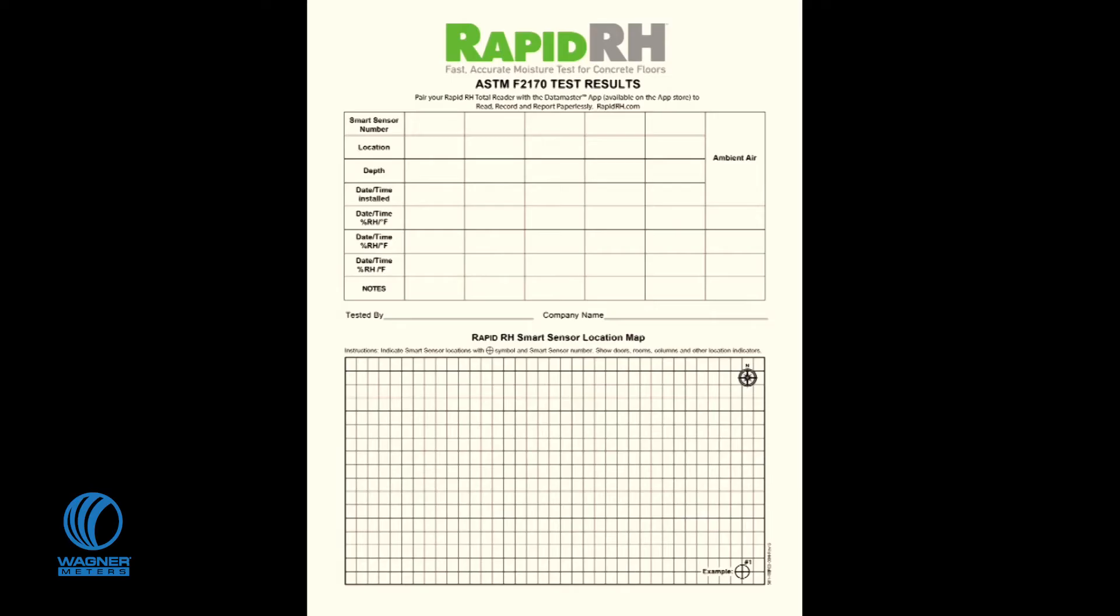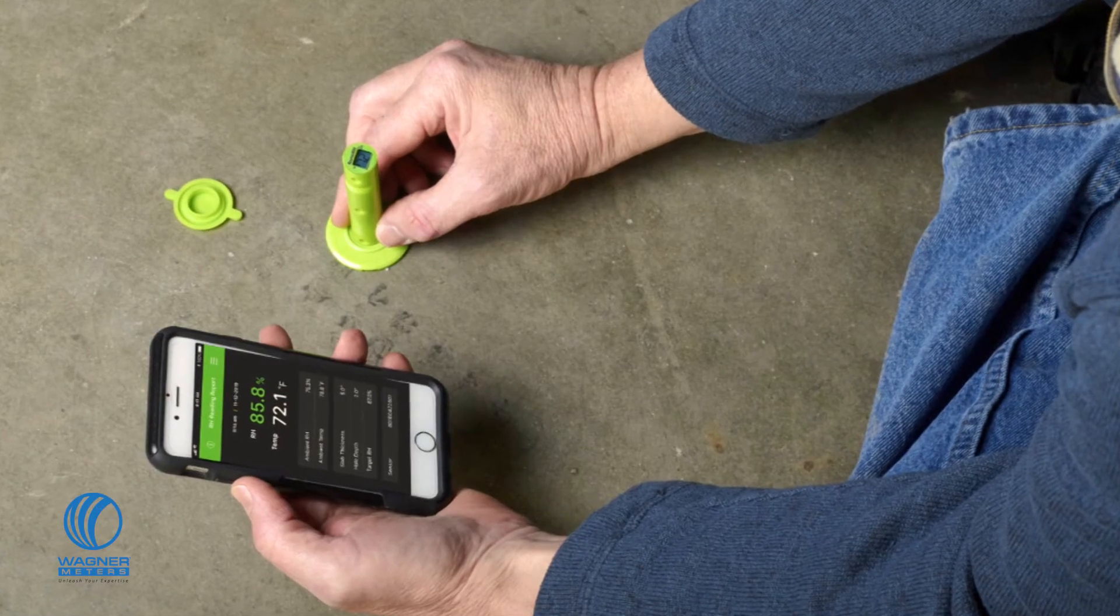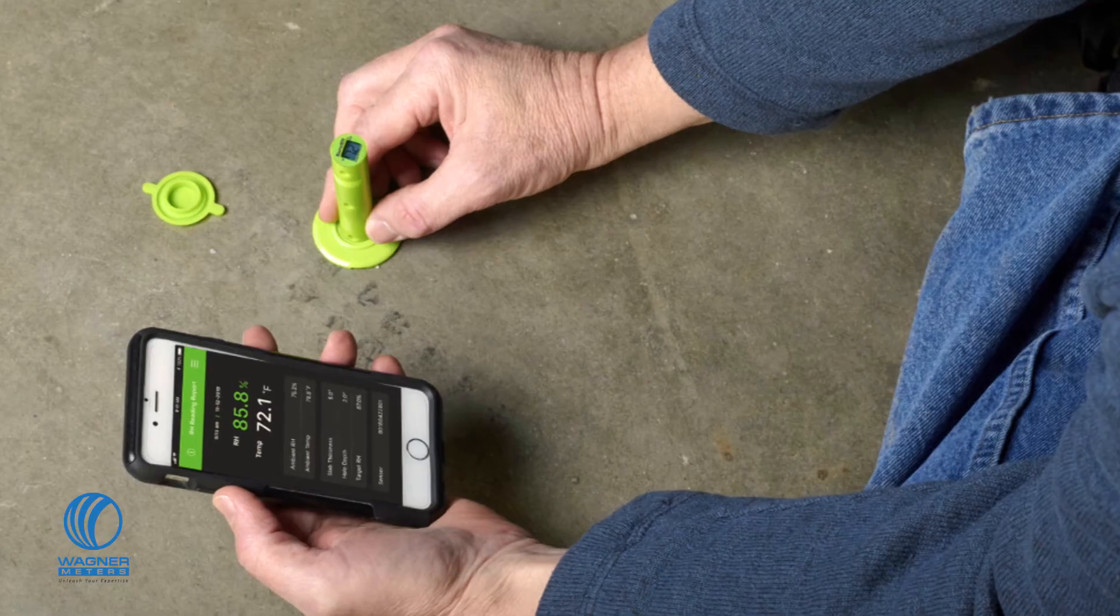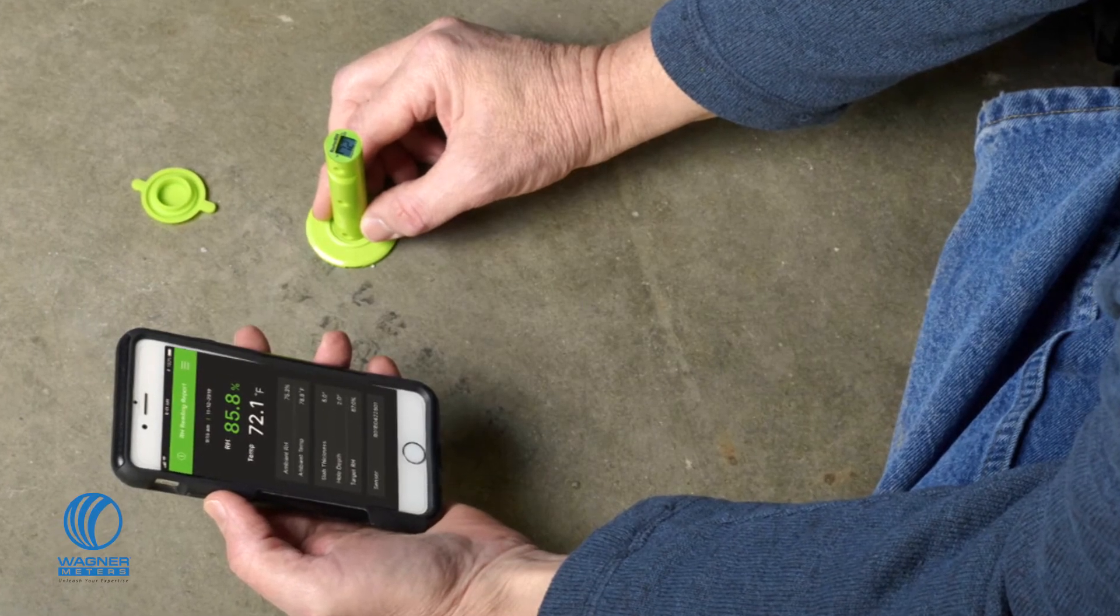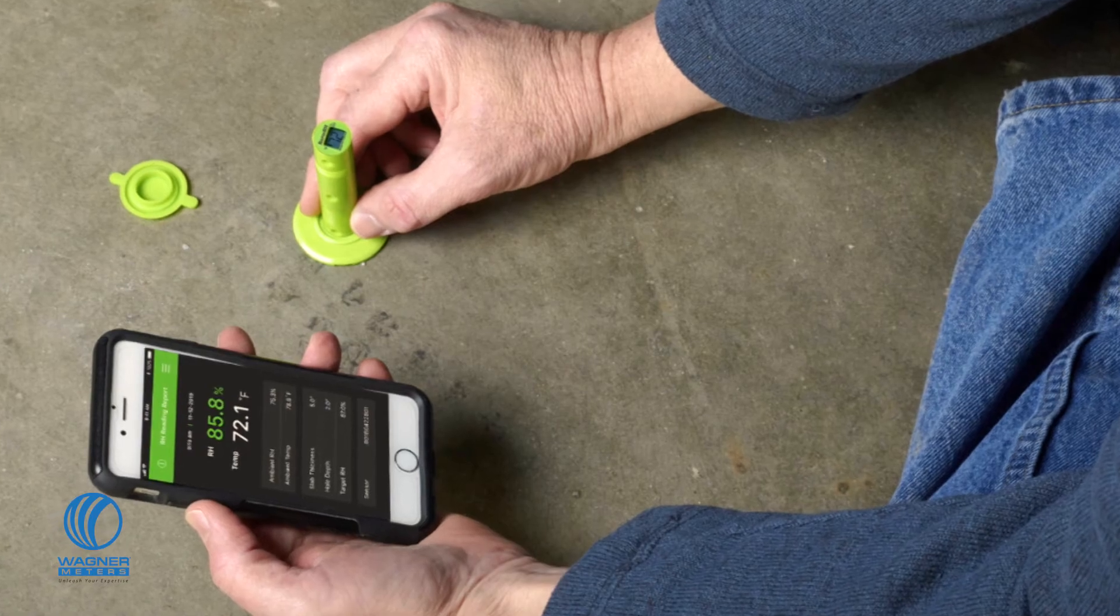Record the readings on the plotting chart that is included with each package of L6 smart sensors. As an alternative, you may also use the total reader to send your sensor readings as well as ambient temperature and relative humidity readings to the DataMaster app on your smart device.